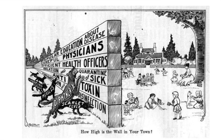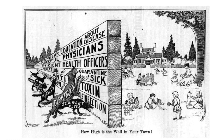This is one of my favorite images — a public health graphic from the pre-antibiotic era, showing these evil animals representing the major diseases killing children at the time: scarlet fever, diphtheria, measles, and whooping cough. On the other side is this wall of public health — quarantine, health officers, physicians — protecting innocent children. The caption says, 'How high is your wall?' That was what they had to prevent death in children at the time.